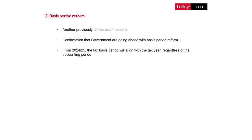The government aren't mandating every business to have a particular accounting date, but obviously if you have an accounting date that is not aligned with the tax year it is going to become more complicated to calculate your profits. It should be noted that the 31st of March will be treated as aligning with the tax year so that you don't have to do an apportionment of a couple of days.